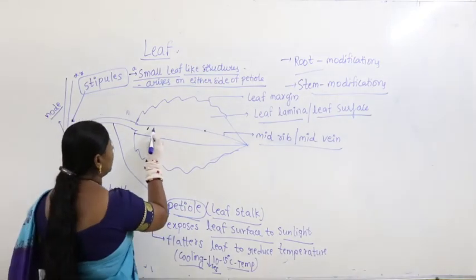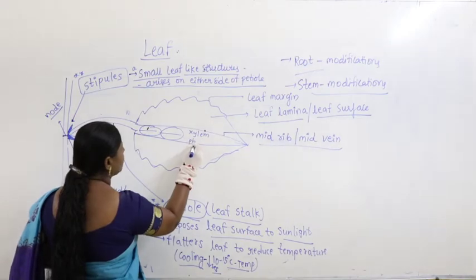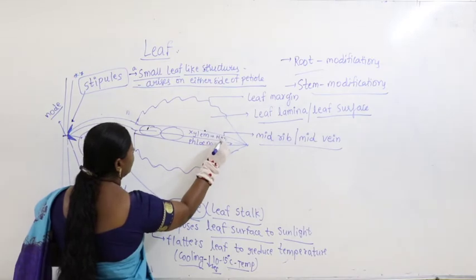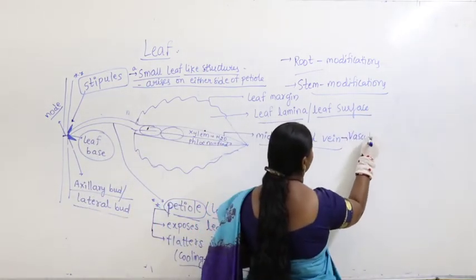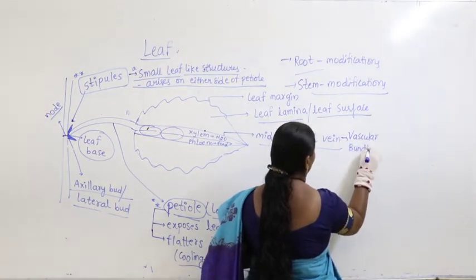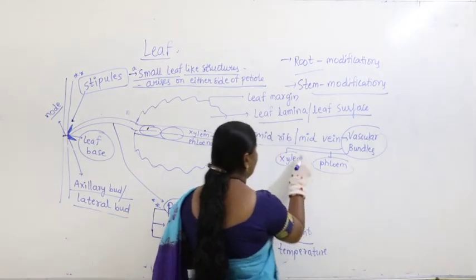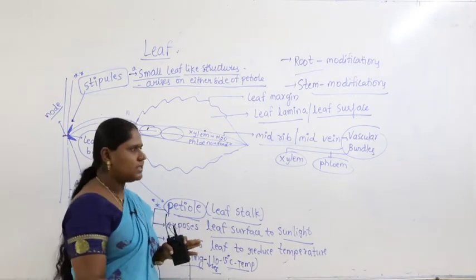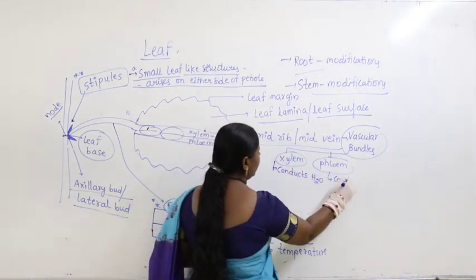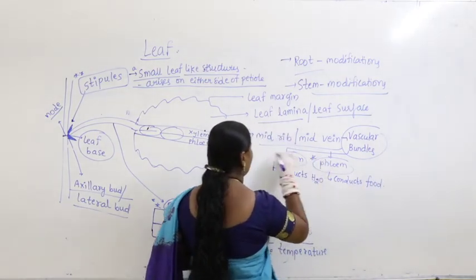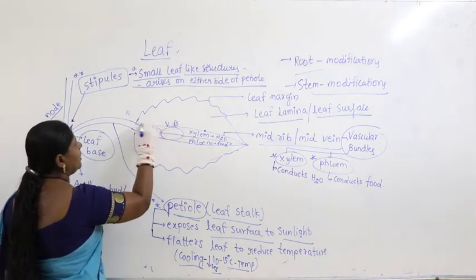The midvein contains vascular bundles — specifically xylem and phloem. Xylem conducts water and phloem conducts food material. Even though the midrib of a leaf appears very small, if you place it under a microscope, you can see many components of xylem and phloem. Xylem itself has four components and phloem also has four components, which we will discuss later.